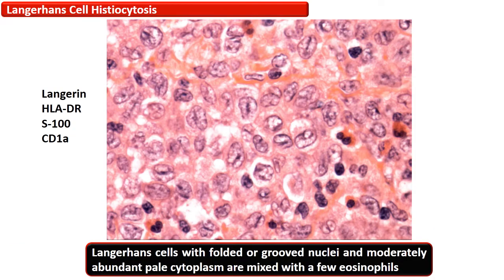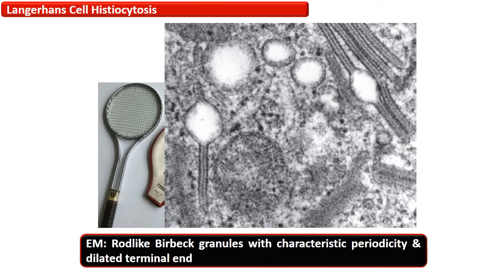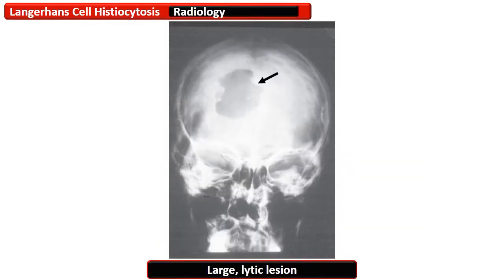This photomicrograph shows a collection of large histiocytes containing eosinophilic cytoplasm and folded, convoluted, or grooved nuclei, with some eosinophils also present. These cells are positive for Langerin, HLA-DR, S100, and CD1A on immunohistochemistry. Another photomicrograph shows cytoplasmic and nuclear positivity for S100 protein. On electron microscopy, histiocytes show rod-like structures with a dilated end imparting the appearance of a racket — termed Birbeck granules. The X-ray of the skull shows a large lytic lesion with no surrounding new bone formation.